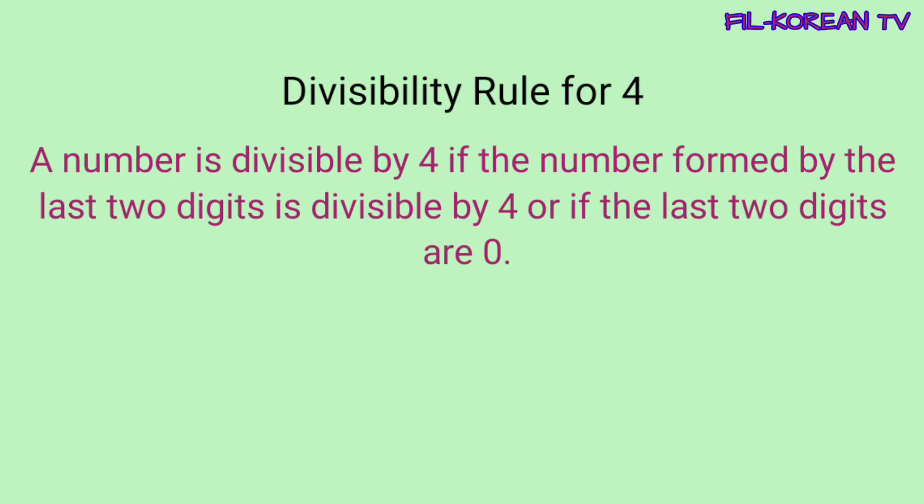Para malaman natin kung ang isang number ay divisible by 4 o hindi, ang titignan natin ay yung dalawang nasa hulihang numero. Kapag ang number na nabuo ng dalawang numero sa hulihan ng given number ay multiple ng 4, yung given number ay divisible by 4. O kaya naman kapag ang number ay nagtatapos sa dalawang 0.